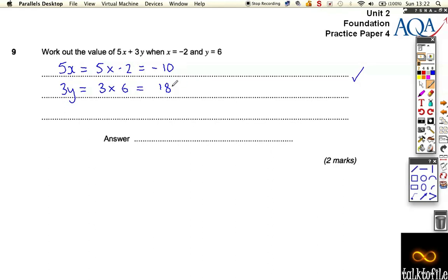You don't get one mark for each, it's one or the other. If you've got both right, obviously you need both right to get the next mark. Now we have to add these answers together.